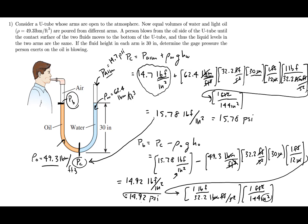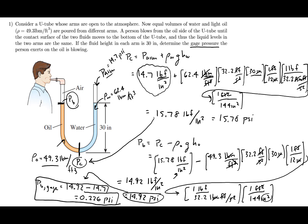So 0.226 psi is the gauge pressure that the person is exerting when they blow into this tube.